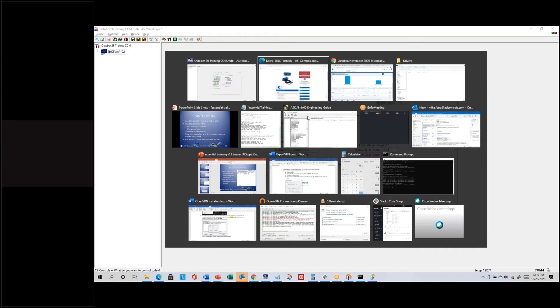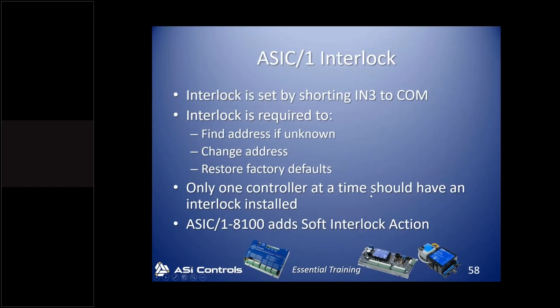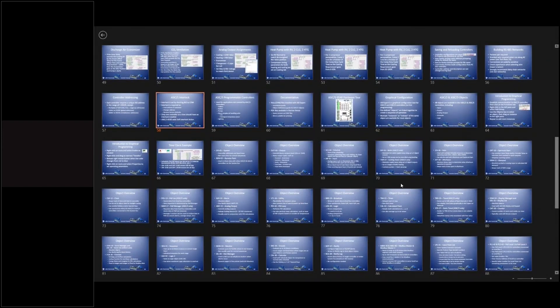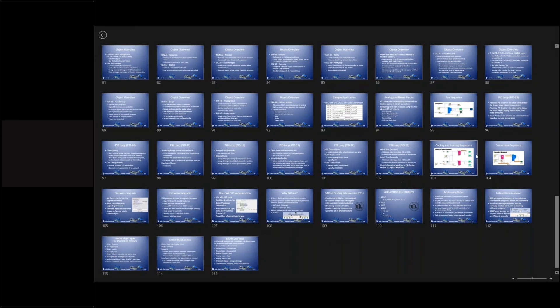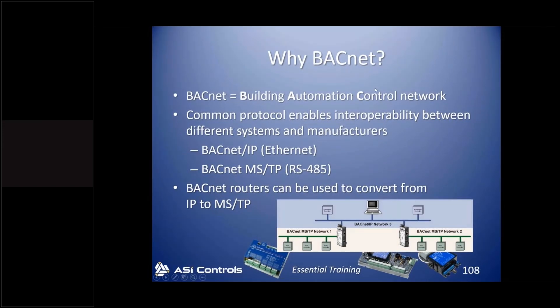We have a little bit of time, so I'm going to jump ahead in the slides toward the end of the document to cover a little background on BACnet communication — that would be slide 108. BACnet: BAC stands for Building Automation Control, Net stands for Network. There are two basic BACnet protocols now: BACnet IP, which is essentially BACnet over Ethernet — not to be confused with the older BACnet Ethernet protocol — and BACnet MSTP.